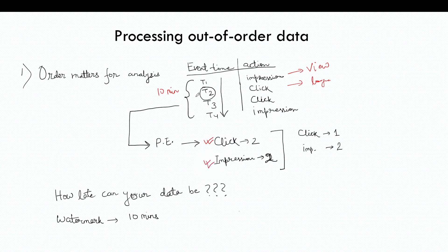But let's assume that event t2 is a little delayed due to network fluctuations or anything. Then the incorrect result will be click one and impression two, because t2 did not reach the processing engine in real time — it was late by five minutes.